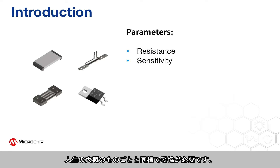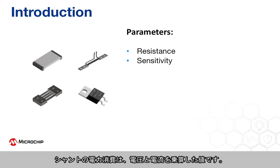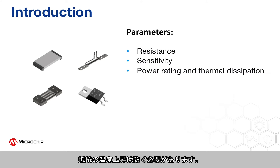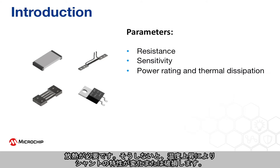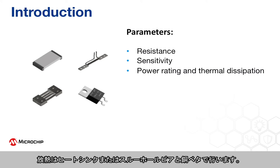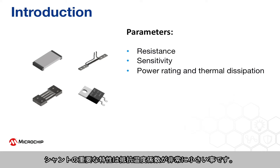As with most things in life, a compromise is necessary. The power dissipated by the shunt is the voltage times the current. The heat cannot be allowed to build up in the resistor — it must be dissipated, or the temperature increase may alter or even destroy the shunt. Heat dissipation can be achieved with a heat sink or by using a large copper area on the PCB with groupings of through-hole vias.